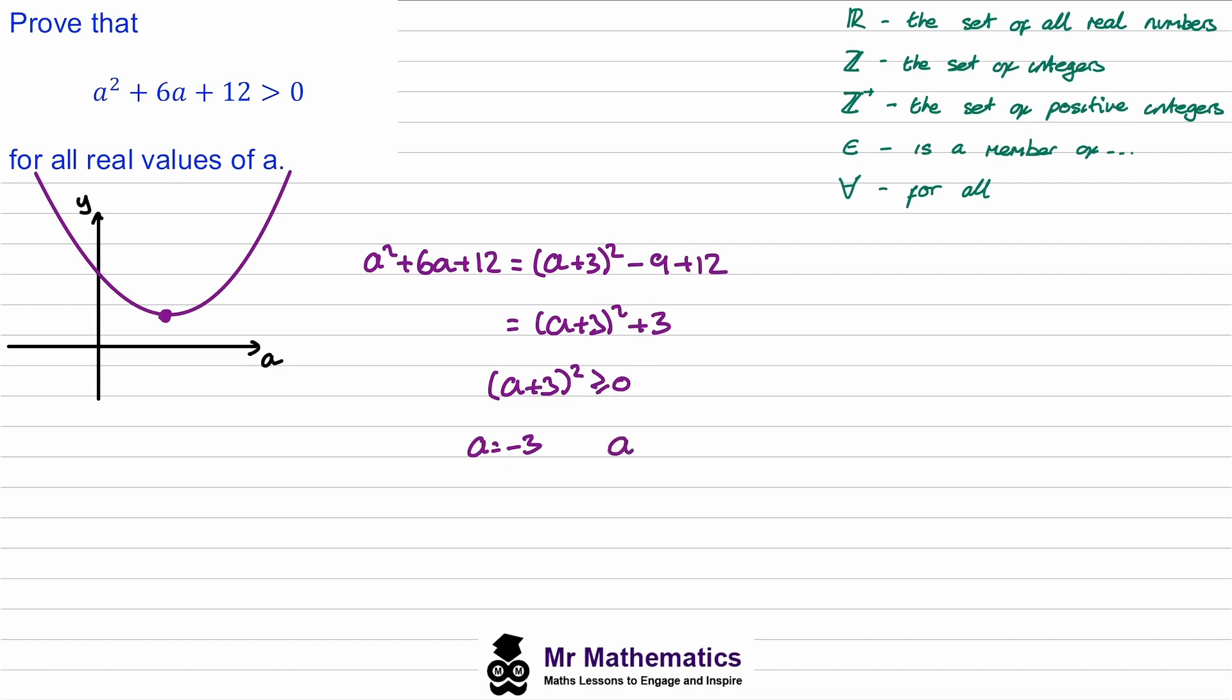But then when you add this positive 3 to it, we know (a + 3)² which can on one instance be equal to 0, but when you add the 3 that must then always be greater than 0. If the lowest this could be is 0 and you're adding 3 to it, it must always be positive or greater than 0.